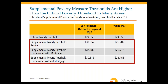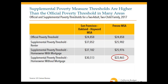A common misperception is that supplemental poverty thresholds are always higher than the official threshold, but they're not — in some cases they're lower. The supplemental thresholds in San Francisco are higher than in Fresno, reflecting higher housing costs in the Bay Area. The official poverty threshold, by contrast, is the same in both places — it's the same for each family type throughout the entire U.S.